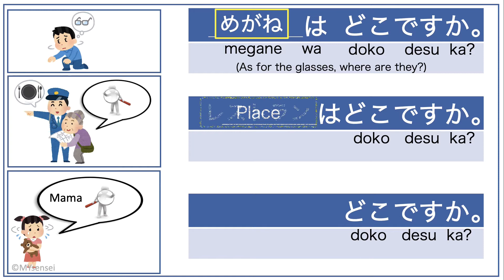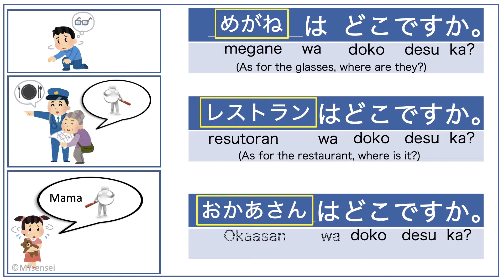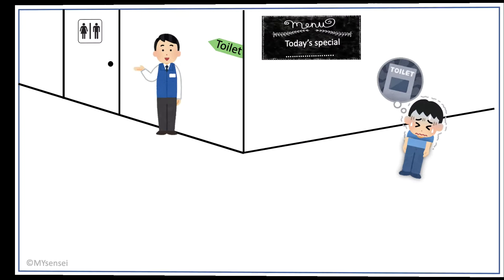As for the woman in the middle panel, she is looking for a restaurant, so she would say, 'Restoran wa doko desu ka' — where is the restaurant. For the bottom image, the girl is looking for her mother, so she would say, 'Okaasan wa doko desu ka' — where is my mother.